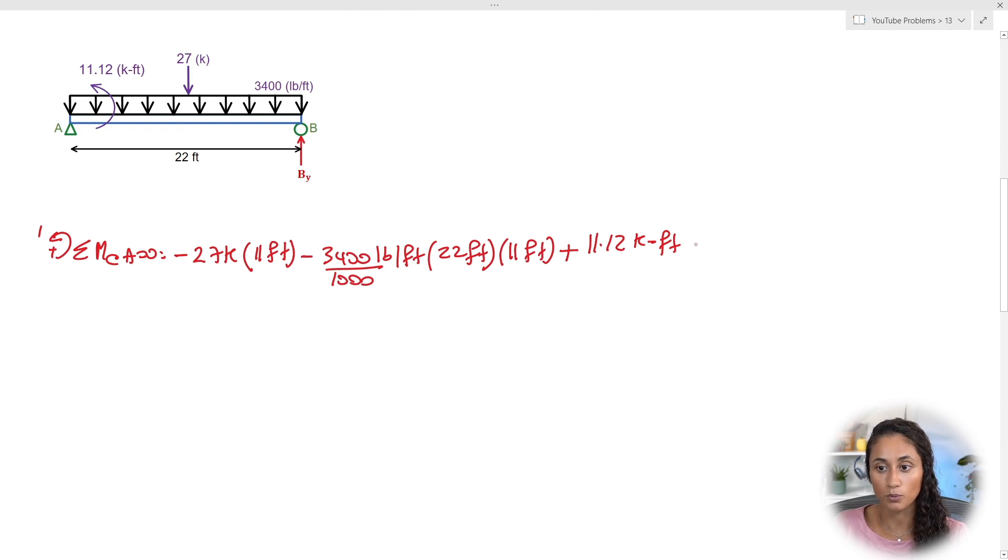So By is also going to be positive because the moment is going up and By is going up. So we're going to have By and then we're going to multiply it by the distance that is perpendicular to the force. This distance is going to be 22 feet. So it's from where we're taking the moment to where B is. So that's going to be 22 and this equation is equal to zero.